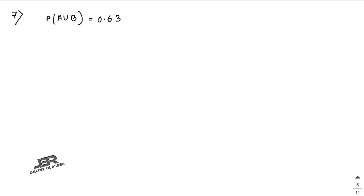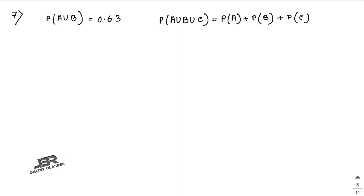Sum number seven: if A, B, C are mutually exclusive and exhaustive events, and it is known that P(A ∪ B) = 0.63, calculate P(C). As A, B, C are mutually exclusive and exhaustive events, P(A ∪ B ∪ C) = P(A) + P(B) + P(C). Since A ∩ B ∩ C = ∅, P(A ∩ B ∩ C) = 0.